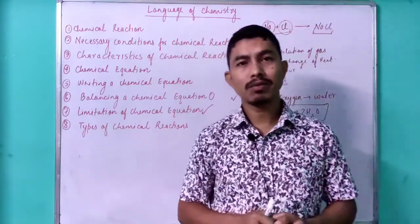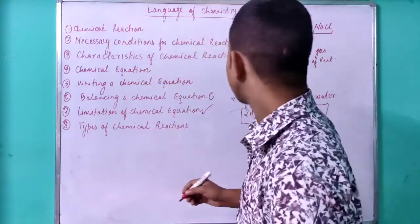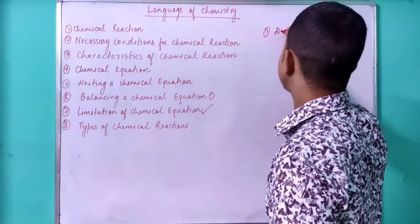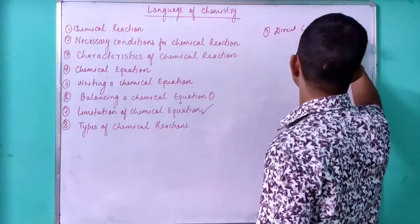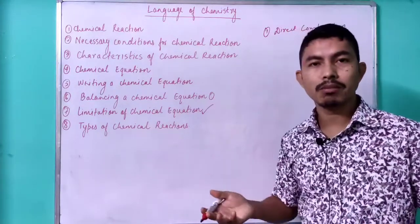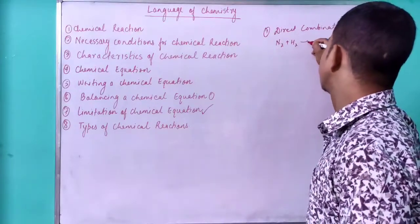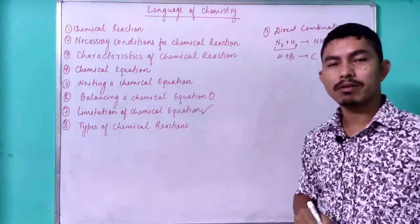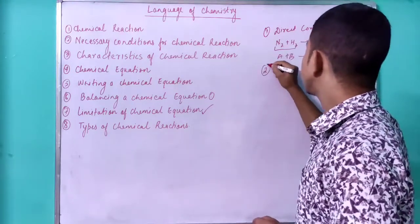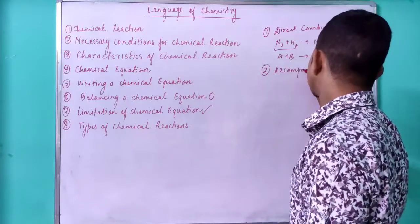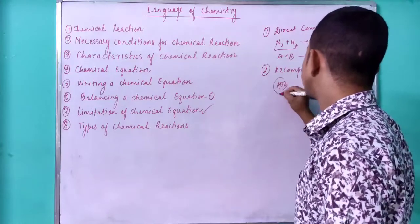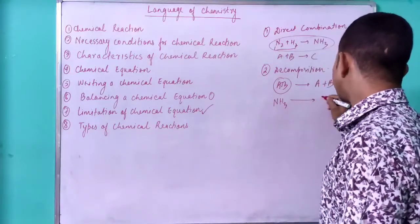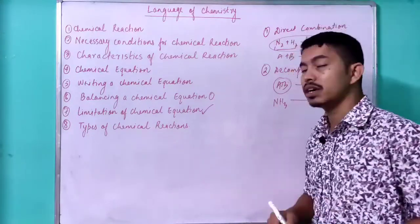Coming to the types of chemical reaction — there are various types which you will learn in detail in class 8, but for now just remember the names. The first is direct combination: two elements directly combine to form a third, like nitrogen + hydrogen gives NH₃. This type, where A + B gives product C, is known as a combination reaction. The opposite is decomposition: a single compound AB when heated gives two compounds A + B. For example, when ammonia is heated it breaks into nitrogen and hydrogen gas. These are known as decomposition reactions.